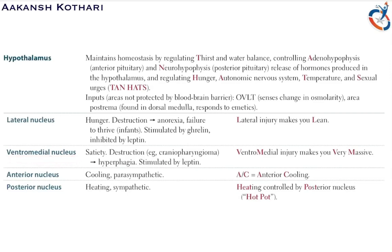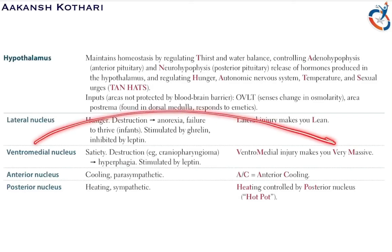The second nucleus is the ventromedial nucleus, which is responsible for satiety. If the ventromedial nucleus is destroyed, it leads to hyperphagia. This is commonly seen in craniopharyngeoma. It is the opposite of the lateral nucleus — stimulated by leptin — and destruction makes a person very massive.